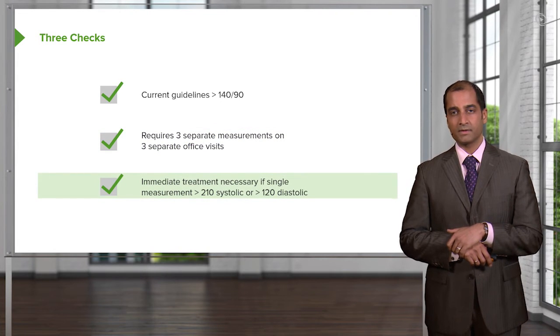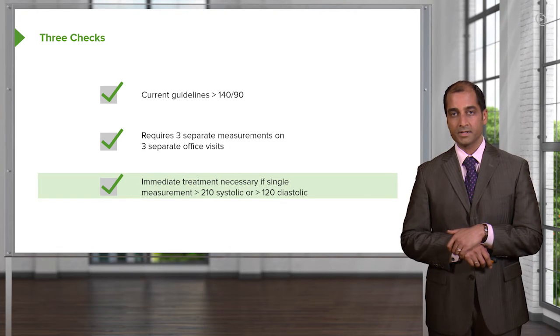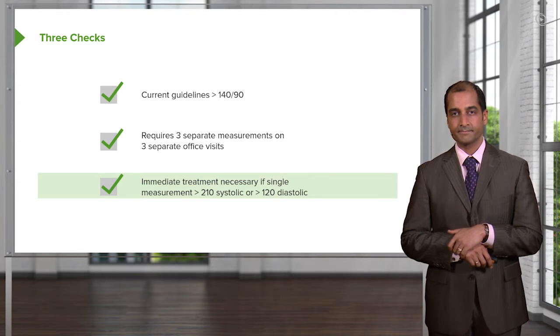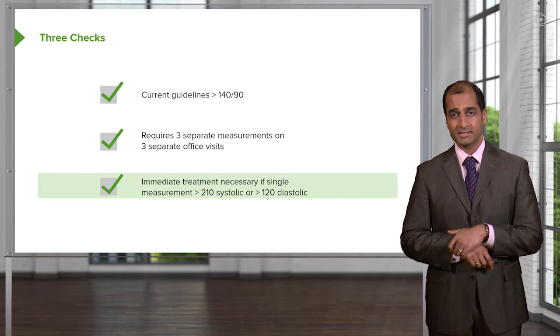Now, once you go beyond 140 over 90, what do you need to do? You want to make sure that you understand at what point do you need to administer therapy immediately. Now we get into blood pressures that are quite high. Take a look at this systole: 210.